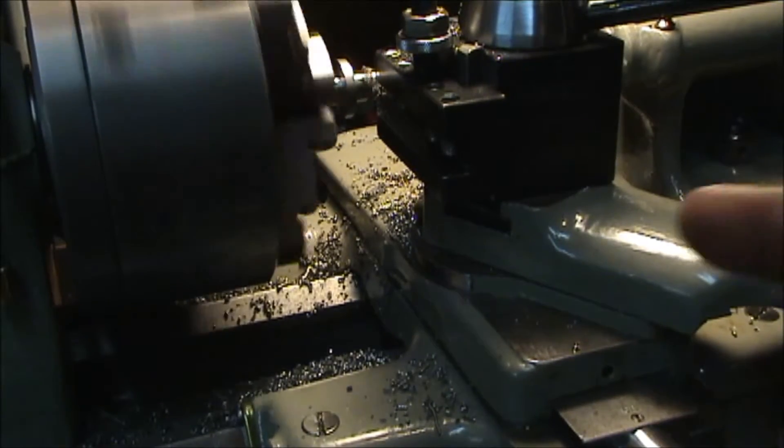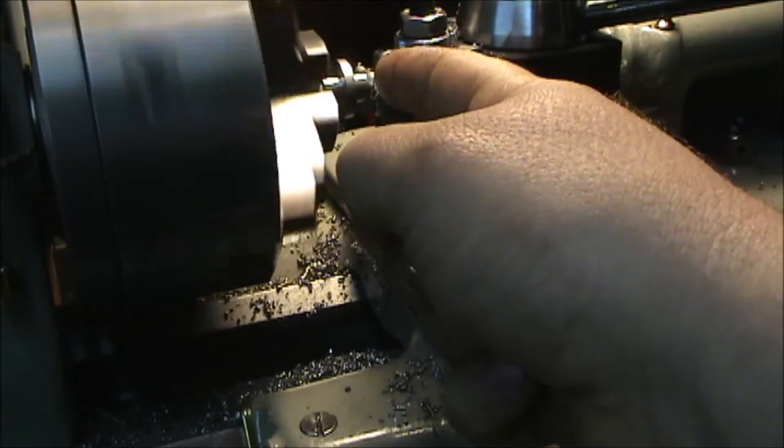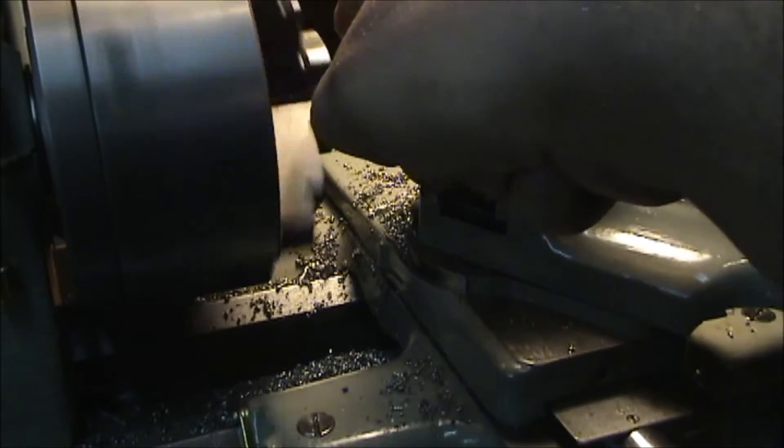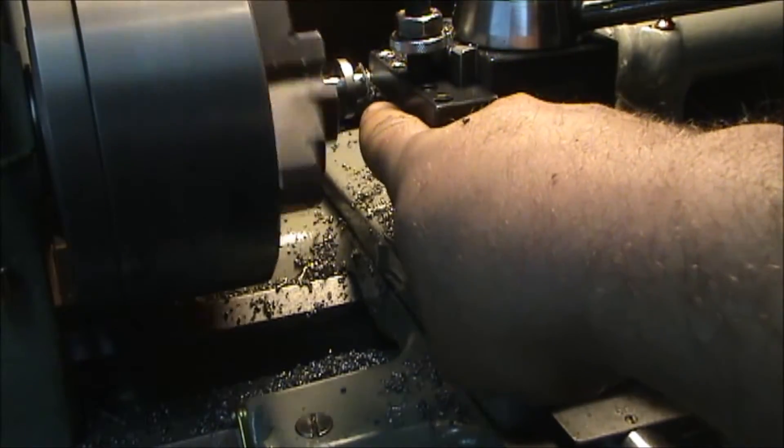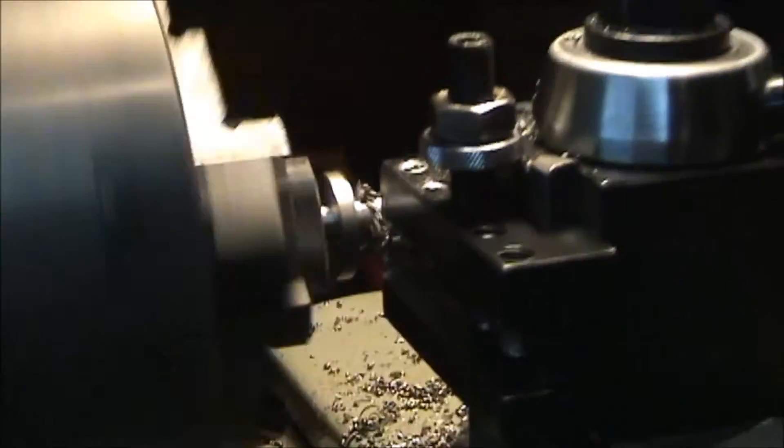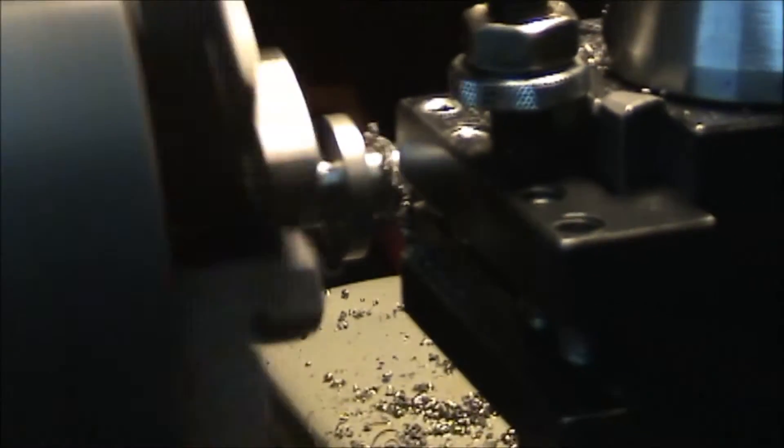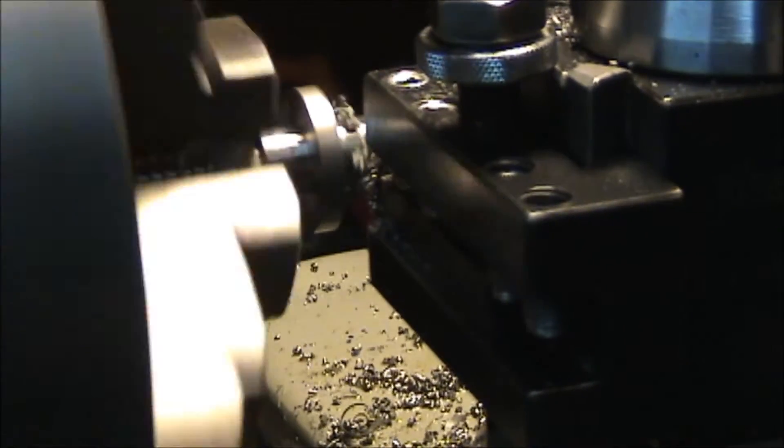To finish up this cut, I'm gonna square off that collar just like we did before, and then I'm gonna skim that larger diameter there down to the size we need, which is 0.920.